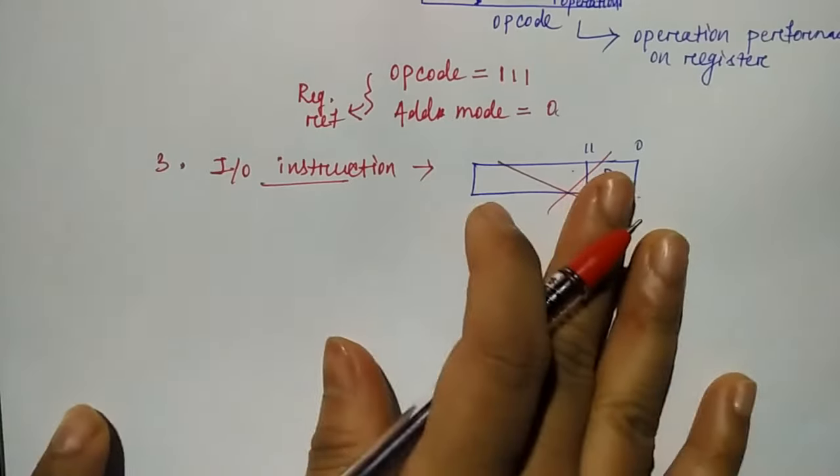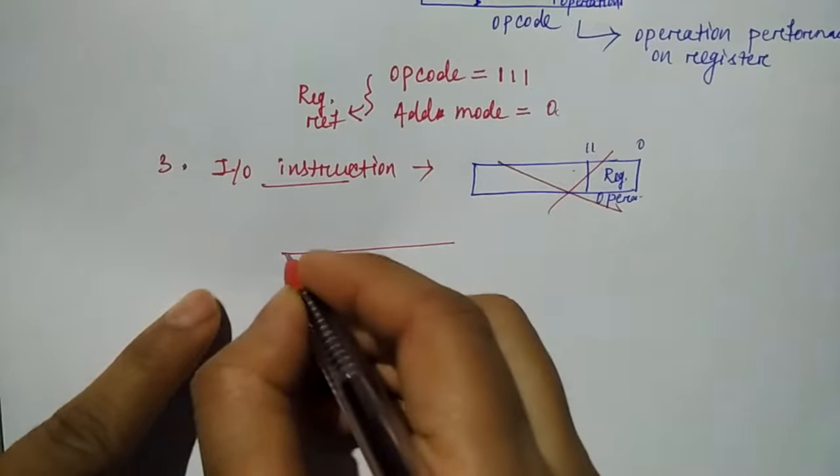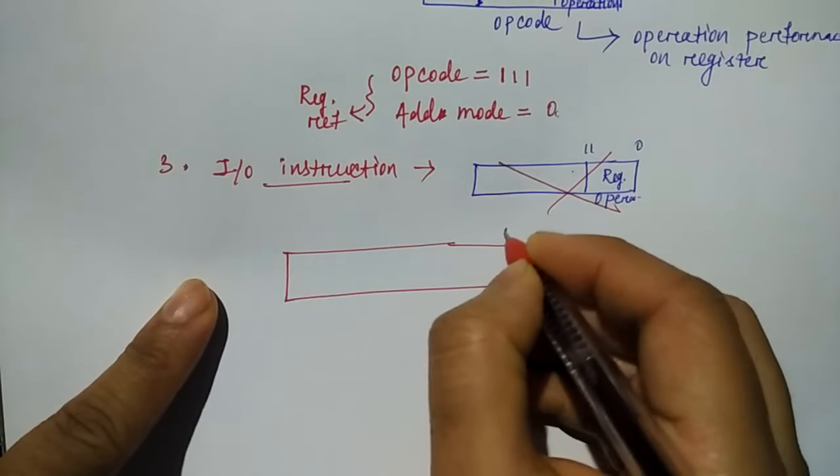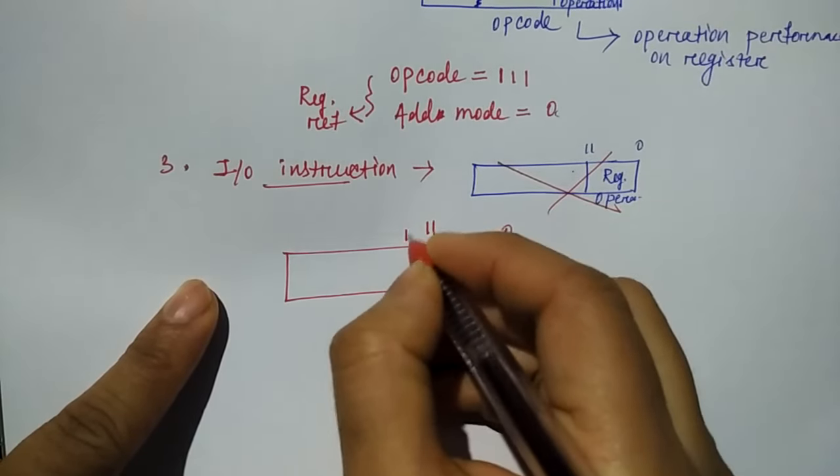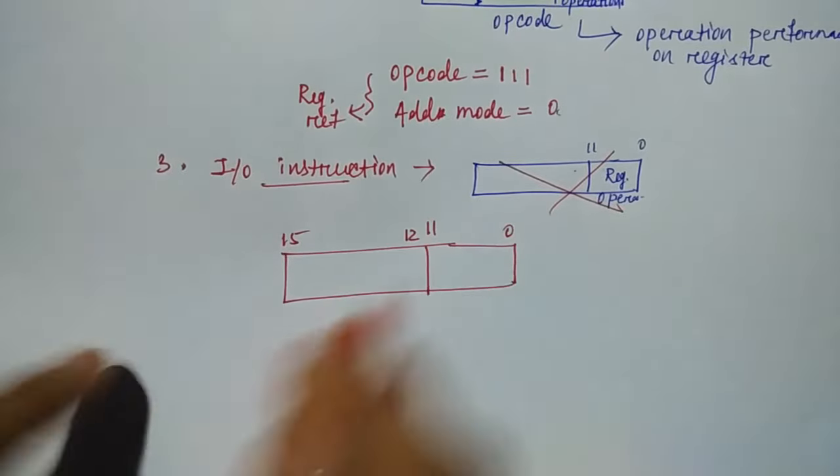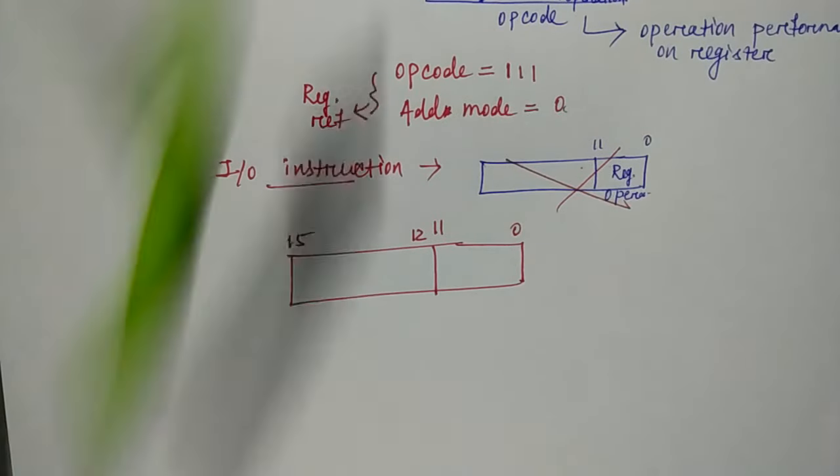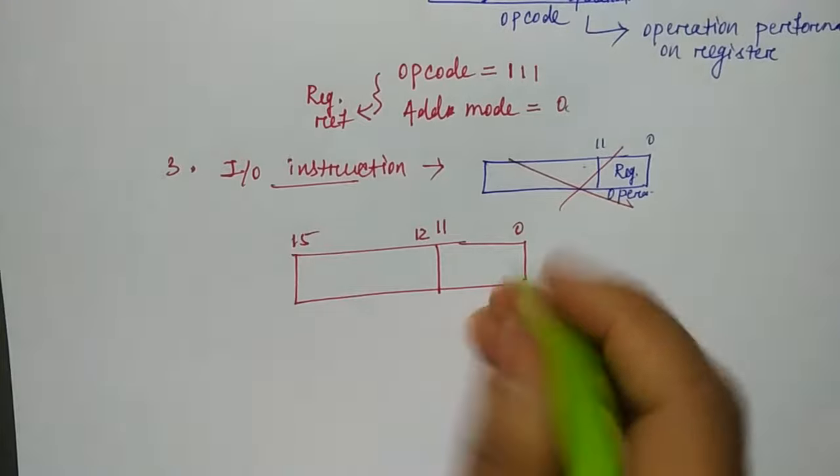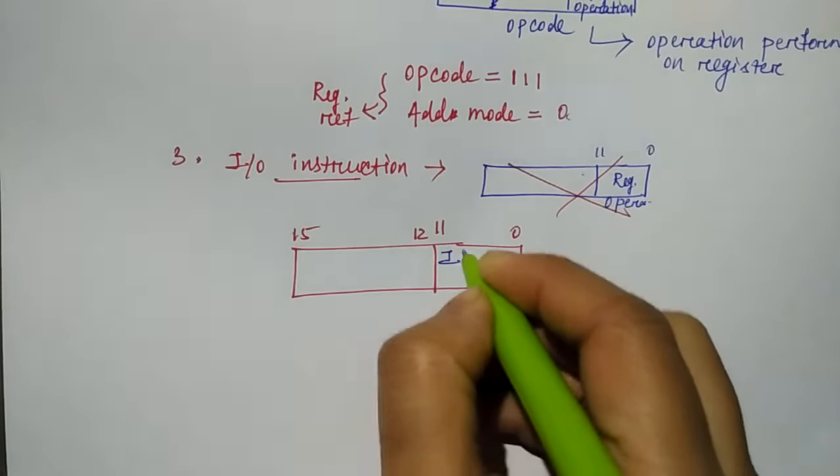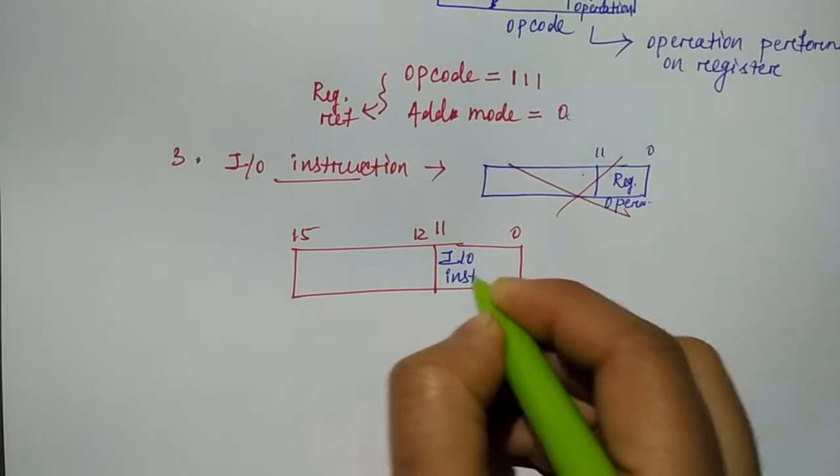What happens in I/O instruction? This is your same 0 to 11 and this is 12 to 15. So in this part, you store the I/O instruction.